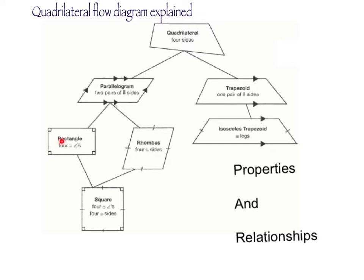A rectangle has four congruent angles — the symbol might be a little hard to read, but it's a congruent symbol — and all four of those angles are right angles. A rhombus has four congruent sides; each of them have the same mark, which shows that they're equal in measure.